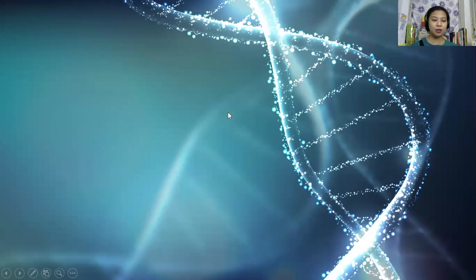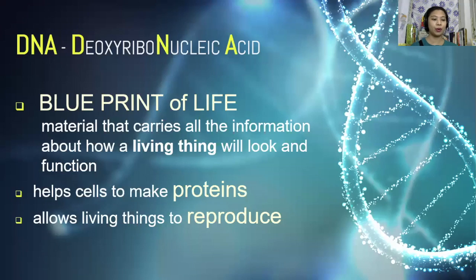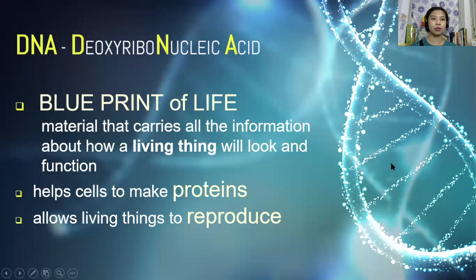You can see on the screen, this is a DNA molecule. DNA stands for deoxyribonucleic acid. It is the material that carries all the information about how a living thing will look or function. Each piece of information is carried on a different section of the DNA. These sections are called genes. DNA is found in every cell of every living thing. It is found in structures of the cell called chromosomes. DNA also helps to make proteins and allows living things to reproduce.